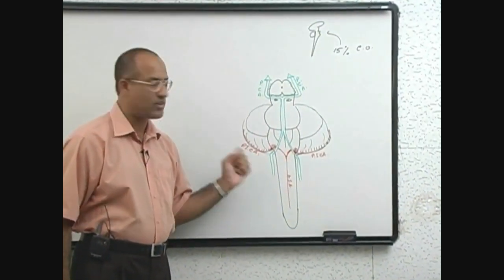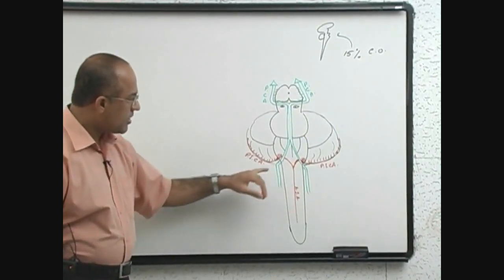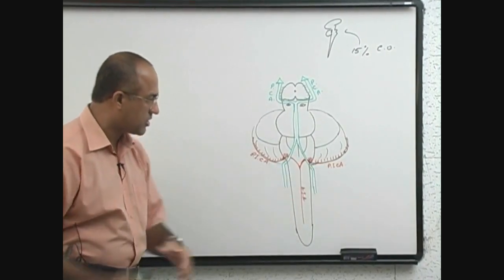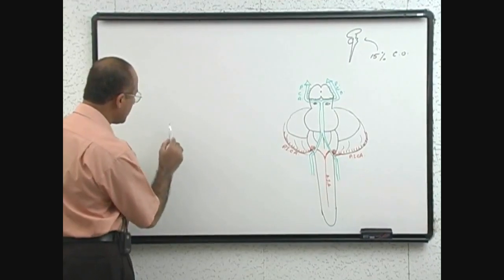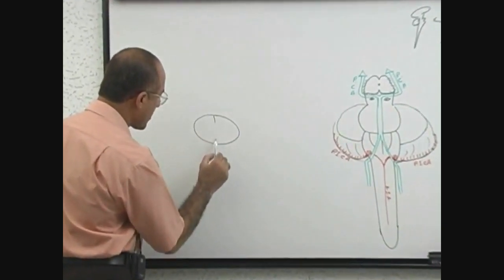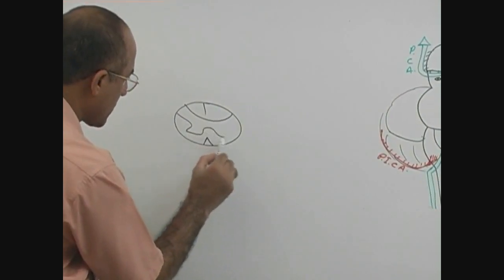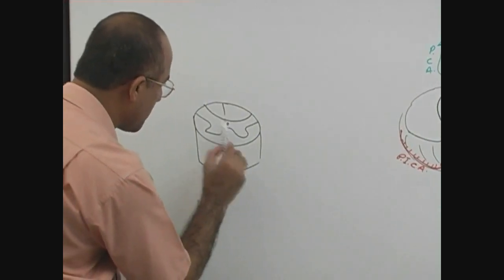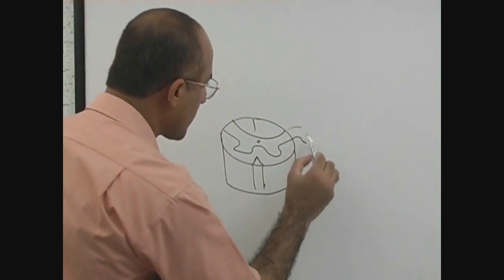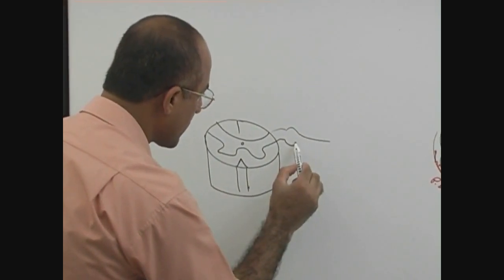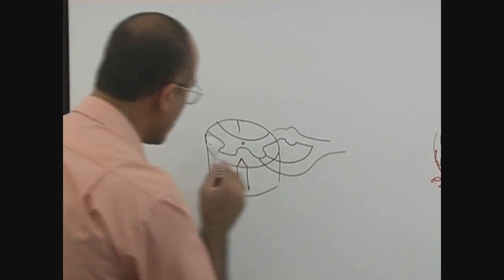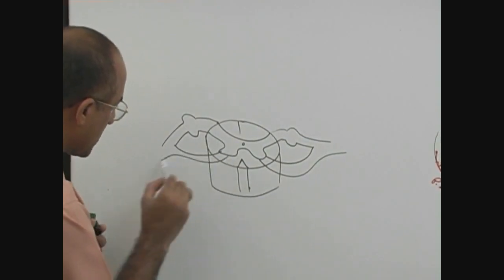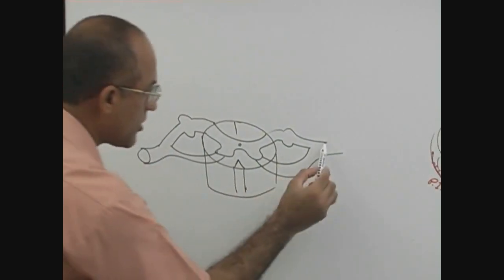Pica means posterior inferior cerebellar artery. Now, first I will talk about anterior spinal artery and its territory of supply and then about this. I will make the spinal cord section here. I hope you recognize the component. This is the posterior root, anterior root.